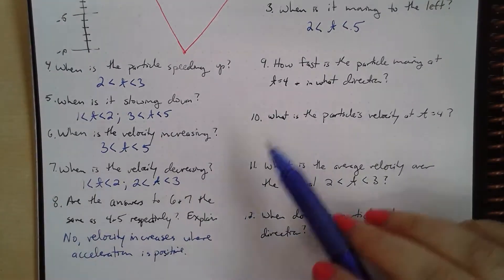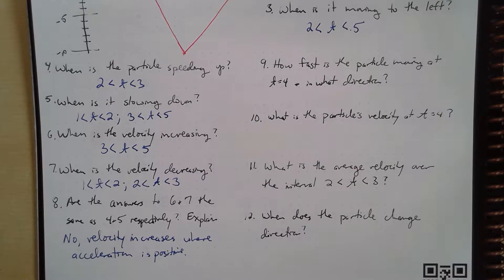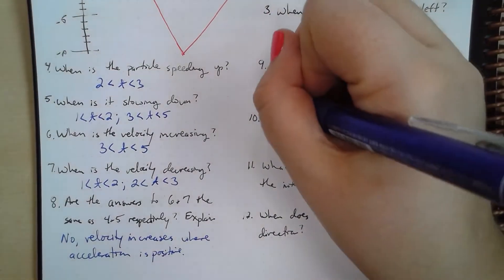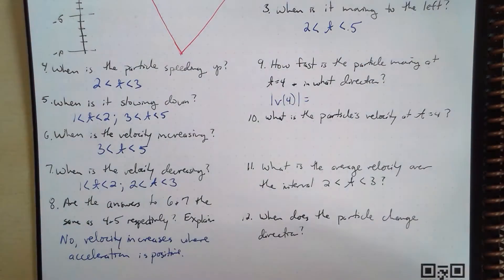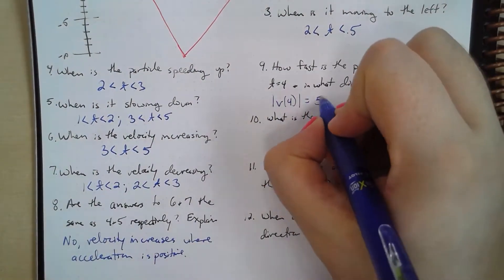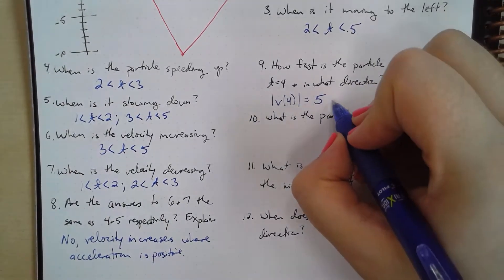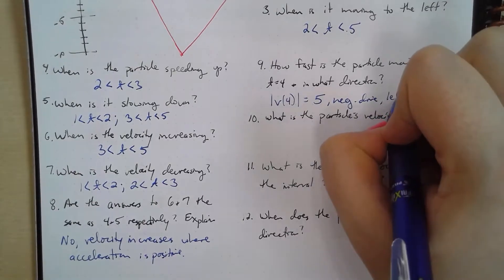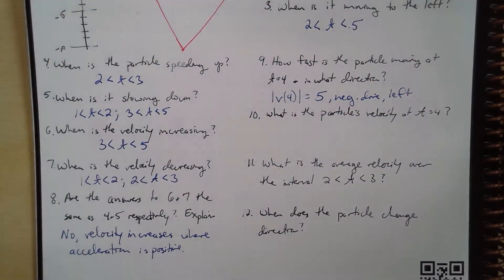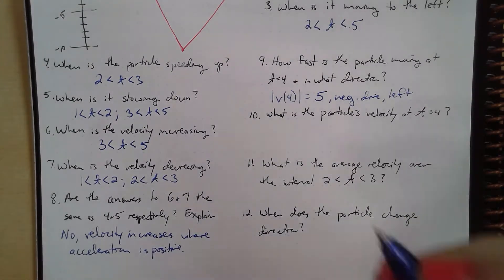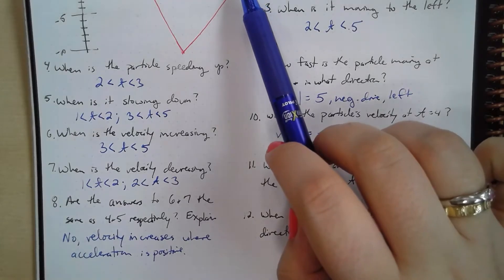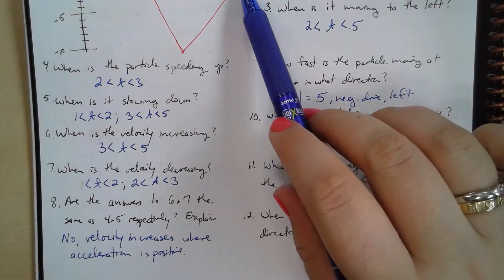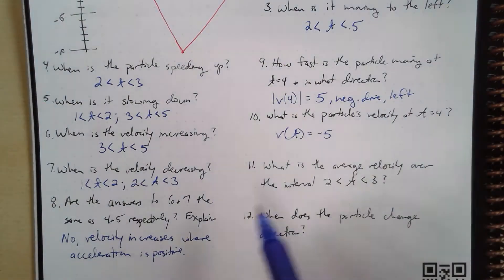How fast is the particle moving at t = 4 and in what direction? We take the absolute value of v(4), which equals 5. The direction is negative, meaning to the left, since we established that negative velocity means moving left. What is its velocity at t = 4? The velocity v(4) is negative 5 — calculated as (−10 − 0) / (5 − 3) = −5.